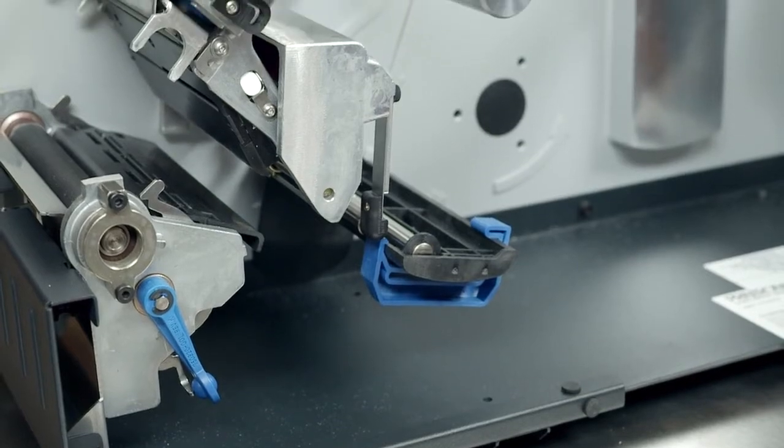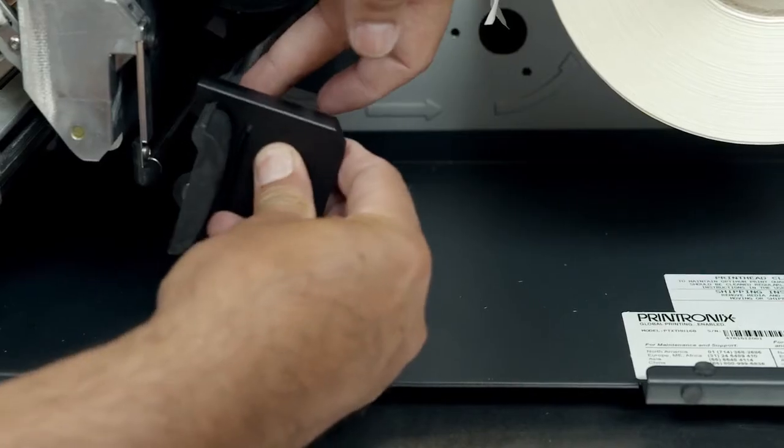Remove the blue media width guide from the media damper and replace it with the black extended media width guide.